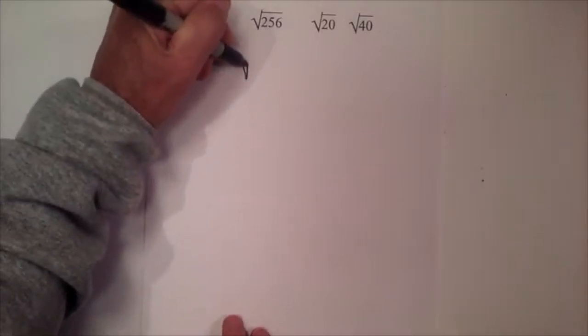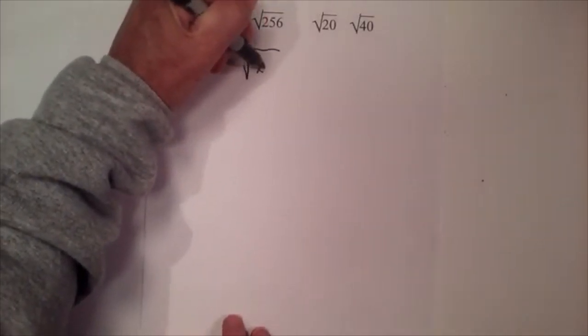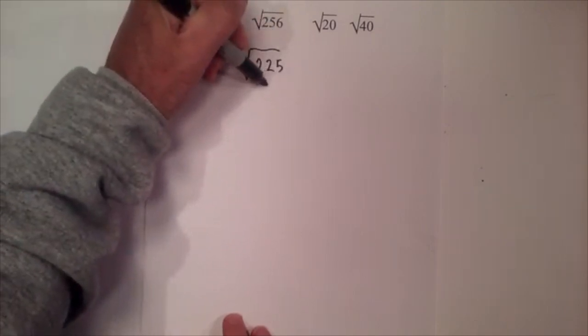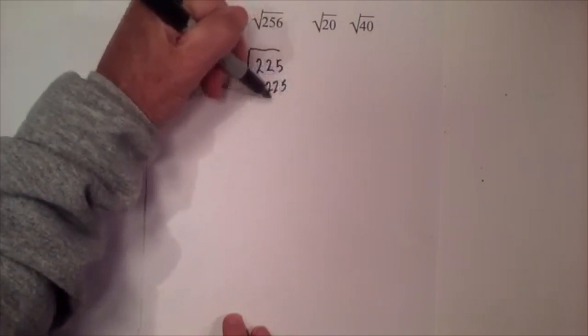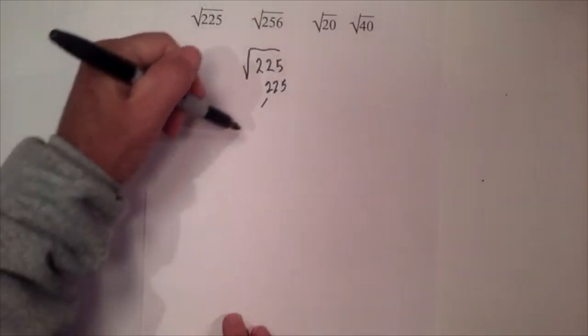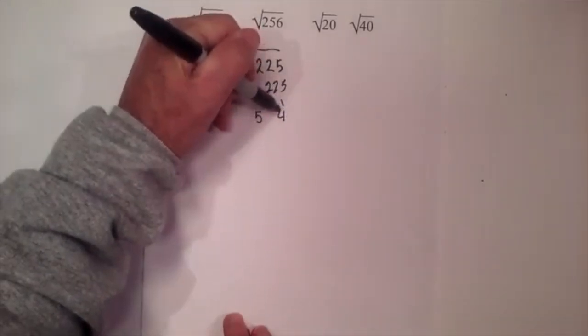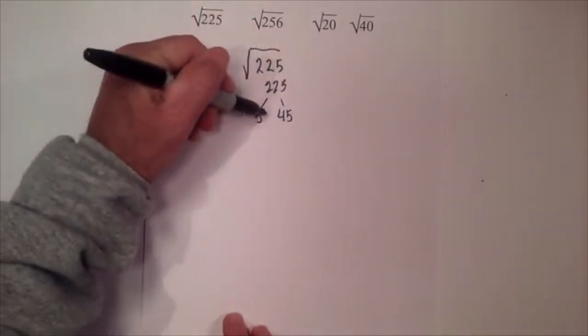Okay, first we have the square root of 225. The first thing I like to do is create a factor tree. So for 225 I will divide it by 5, and 5 goes into 225 45 times.